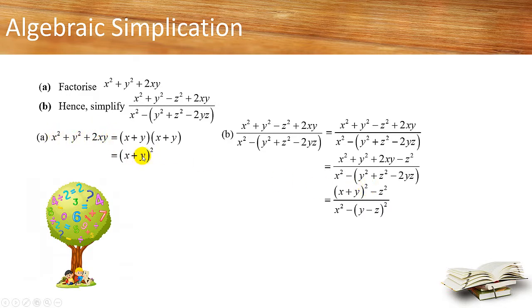Can you recall? These three terms equals to x plus y bracket squared. And of course, these three terms can also be factorized into y minus z bracket squared. Because this is a minus, so this will be a minus.